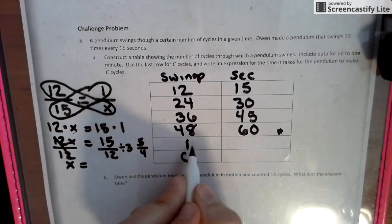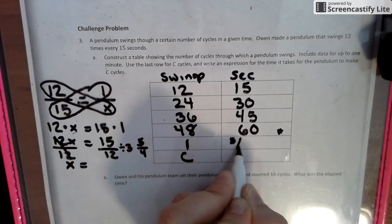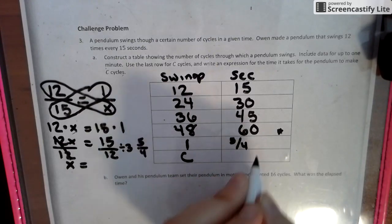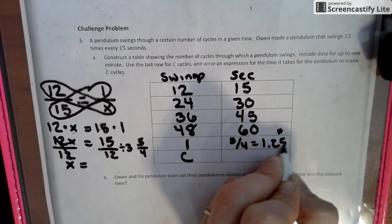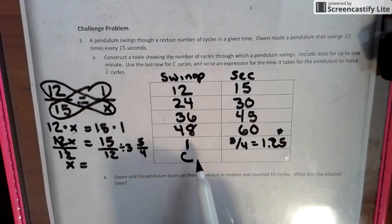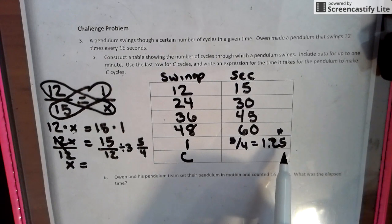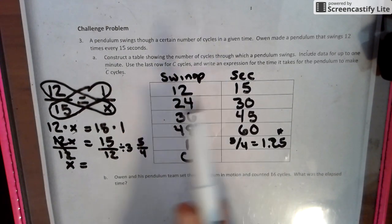So for every one swing, it's five fourths of a second, which is 1.25 if we want to get into the decimal. So for every one swing, it takes one and a quarter seconds, which makes sense because of that.